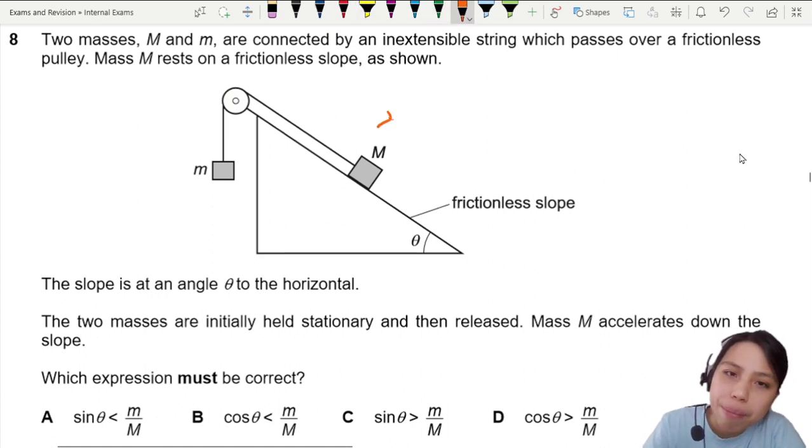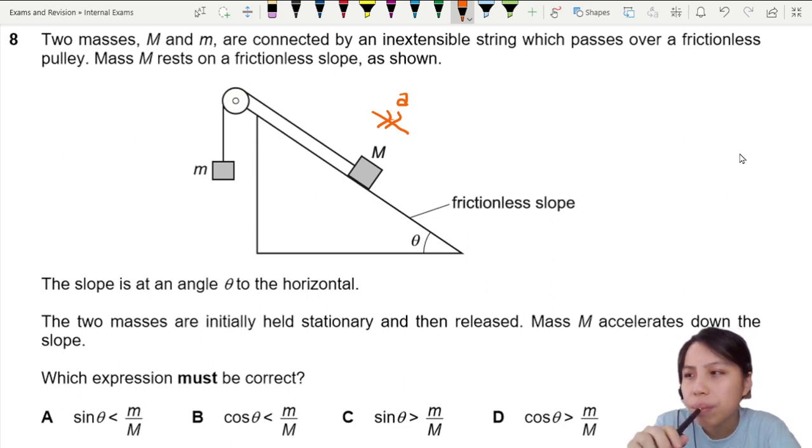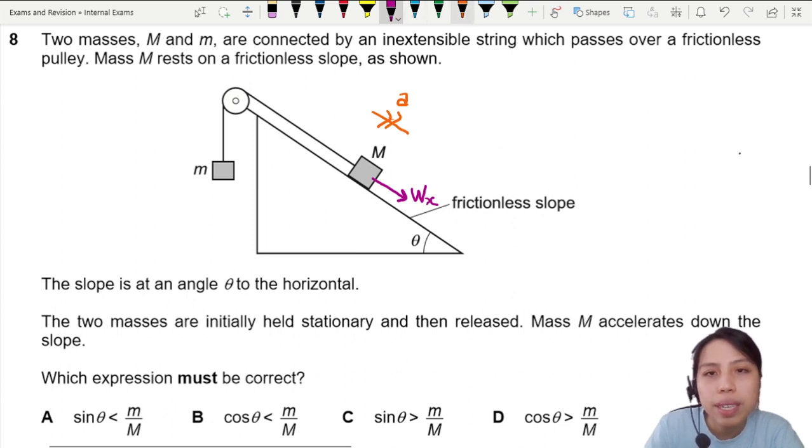If this mass M is accelerating down the slope, means there must be some kind of imbalance force. Some force pulling this mass M down, probably weight, related to weight. We call this the component of weight, let's call this WX. This weight is going to be stronger than the tension force trying to pull this mass up.